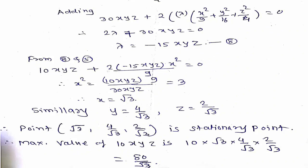From equations 8 and 5: 10xyz + 2(-15xyz)x²/9 = 0, giving x² = 3, so x = √3. Similarly from equations 8 and 6, and 8 and 7: y = 4/√3, z = 2/√3. Therefore (√3, 4/√3, 2/√3) is the stationary point. Substituting into 10xyz: 10 × √3 × 4/√3 × 2/√3 = 80/√3.